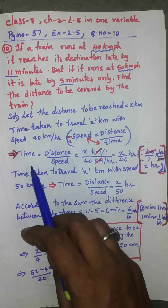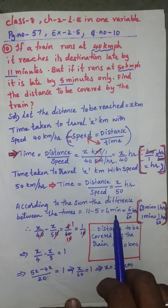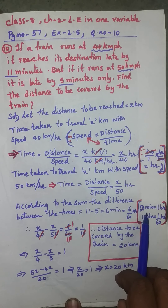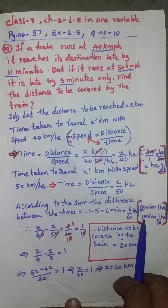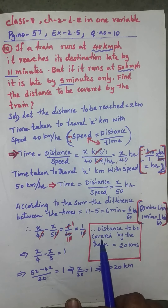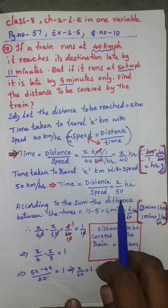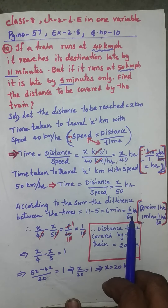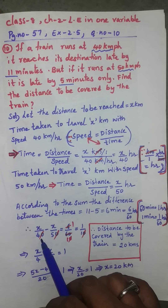Since the times are in hours, we must convert 6 minutes to hours. We know 60 minutes = 1 hour, so 1 minute = 1/60 hour. Therefore 6 minutes = 6/60 hours. Our equation becomes: x/40 − x/50 = 6/60.